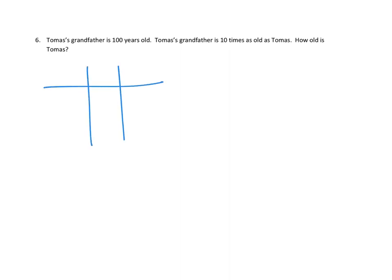So Tomás' grandfather is 100 years old. Let's see. In our place value chart, ones, tens, hundreds. That's how old the grandfather is, right? One hundred. He's 10 times as old as Tomás. So what would Tomás' age have to be so that we could multiply it by 10 and get to 100?